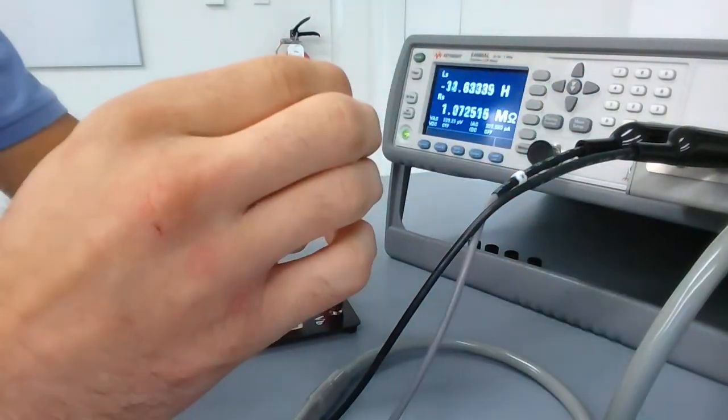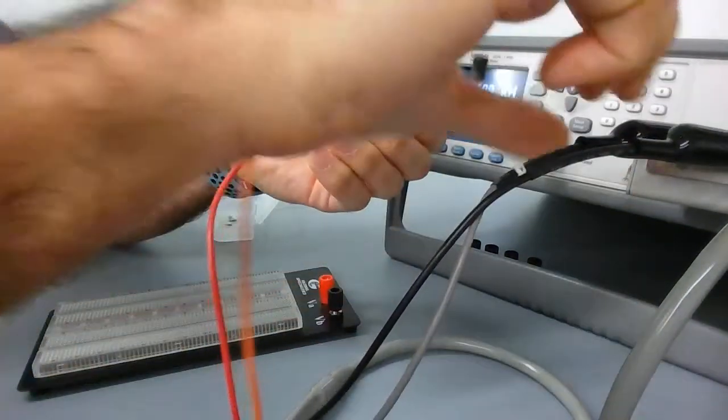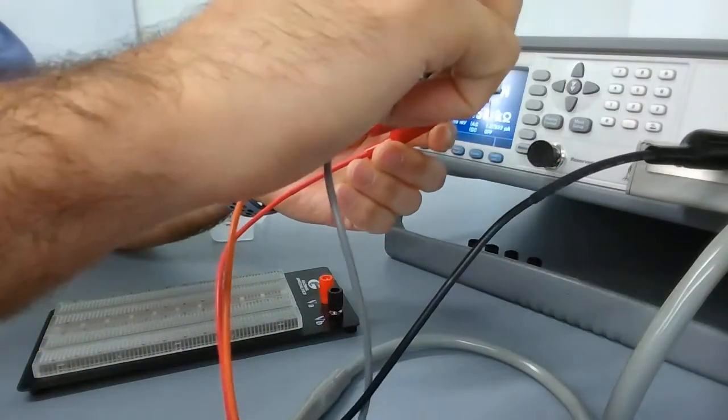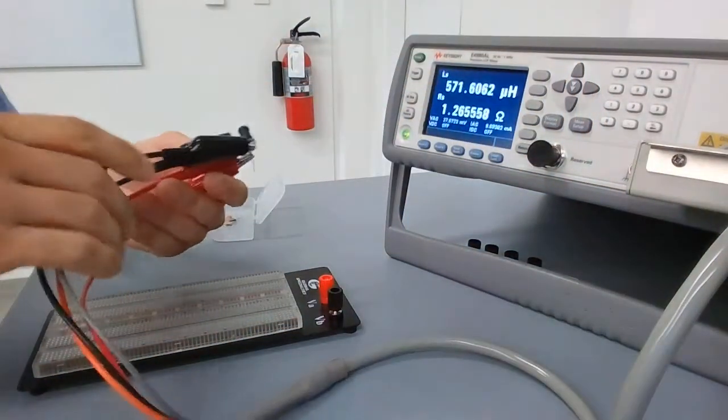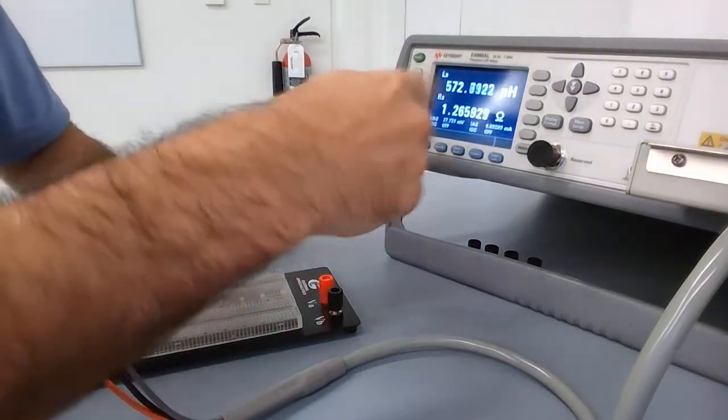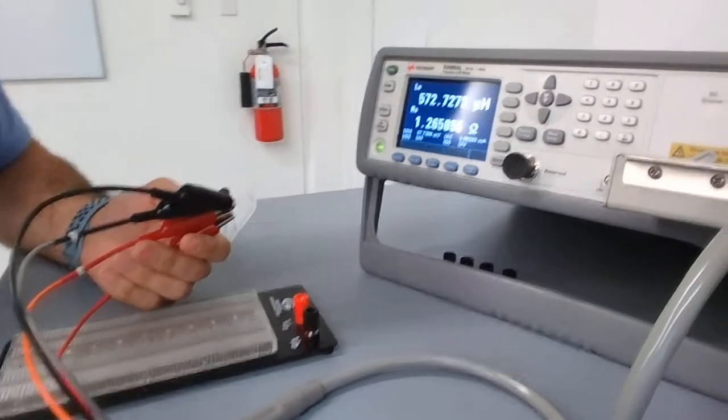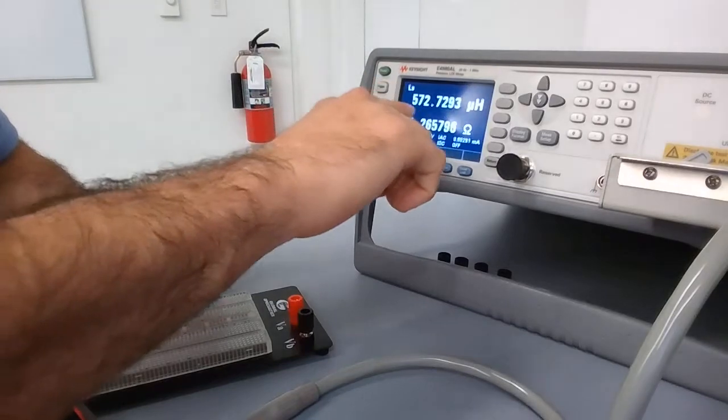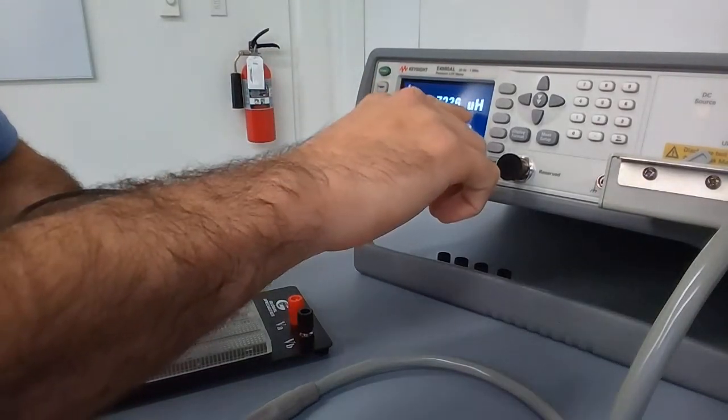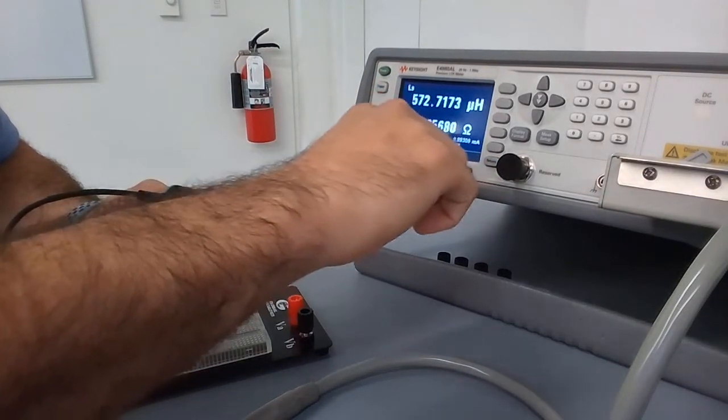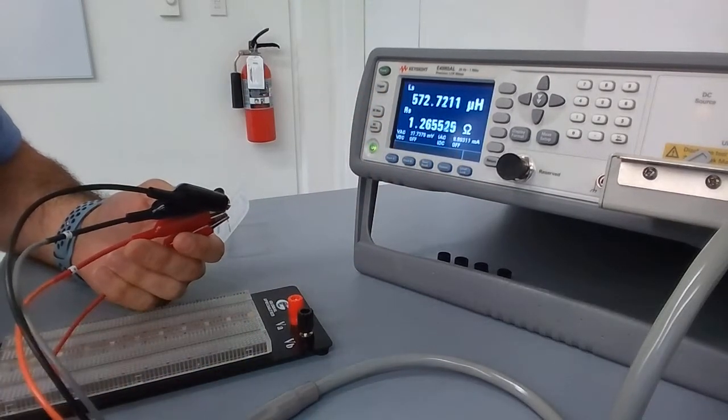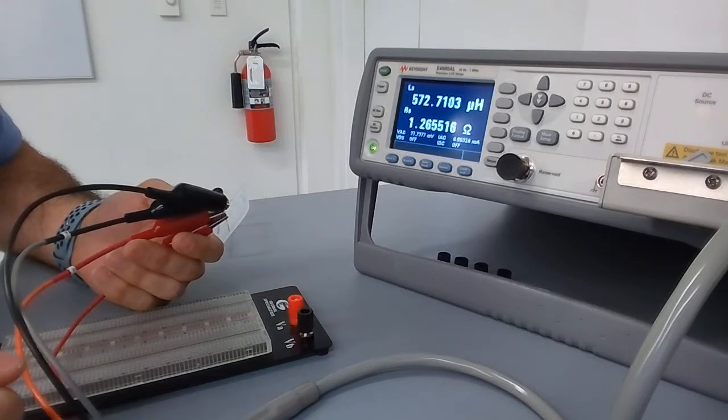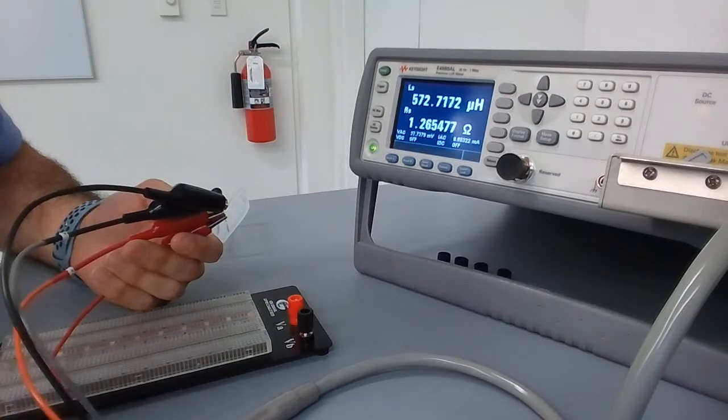Let me go ahead and do the voltage and current probe on the high side and voltage and current probe on the low side. Here it gives me the actual reading: 572.72 microhenries and a resistance of 1.26 ohms. It's a real component so it'll have some resistance as well.